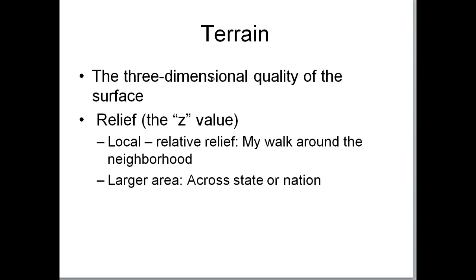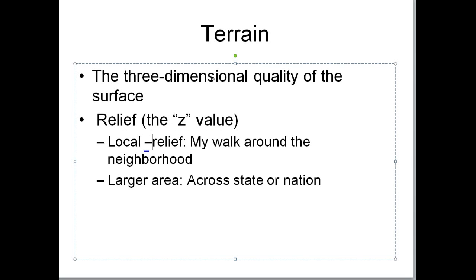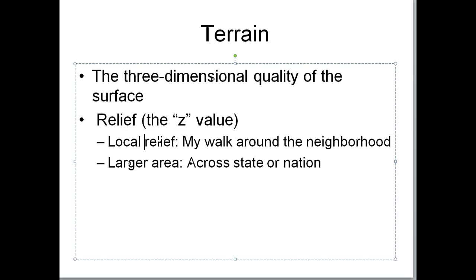We can talk about relief — local relief, which is on a small scale. For example, the relief around my neighborhood is probably from 400 feet up to the top of Spencer's Butte. Or you can look at relief on a larger scale, from sea level up to Mount Hood. It really means the change in elevation from the lowest point to the highest point, and it can be in a country, a county, or a neighborhood. We'll talk about relief from one place to another when we look at topographic maps.